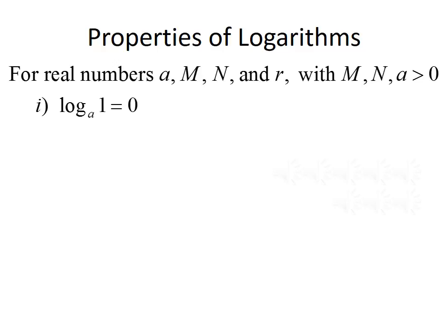First, log base A of 1 is equal to 0. So regardless of the base, a logarithm of 1 is equal to 0. Second, log base A of A is equal to 1. So if the base of the logarithm matches what's inside the logarithm, it cancels out to give us the identity of 1.